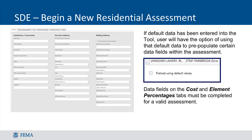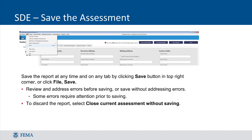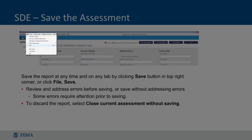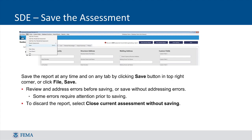If a new property record was selected for the assessment, the Address tab will not contain any data and you must fill out as much information as possible. If an imported property record was selected, then some of the fields will be populated. You have two options to save an assessment: either click the Save button in the top right corner, or navigate to the top left toolbar, click File, and then Save.